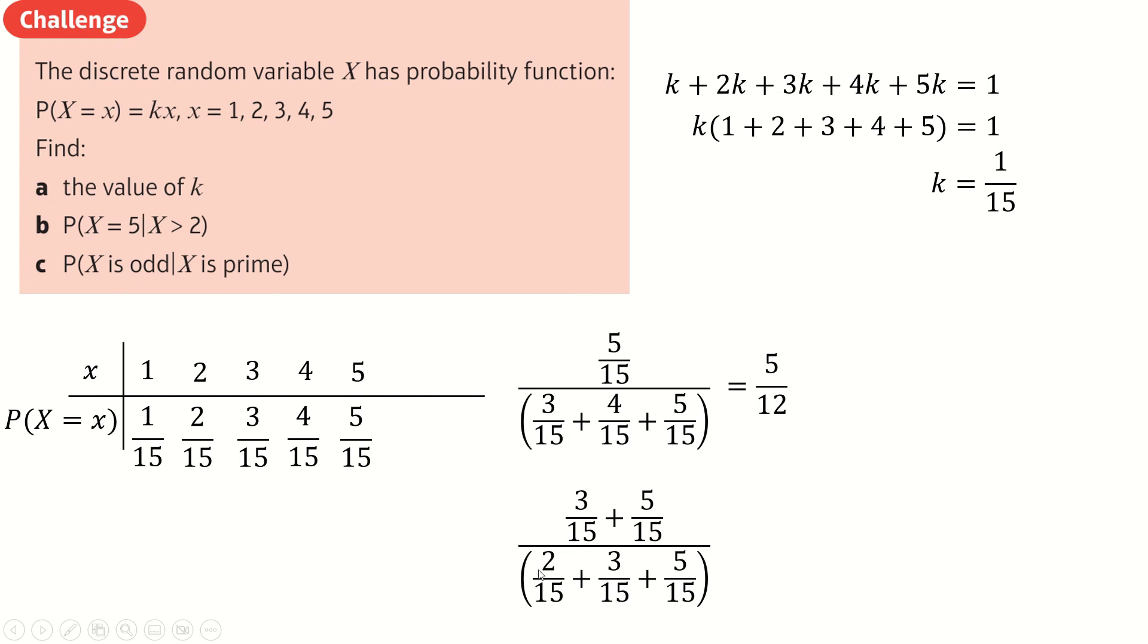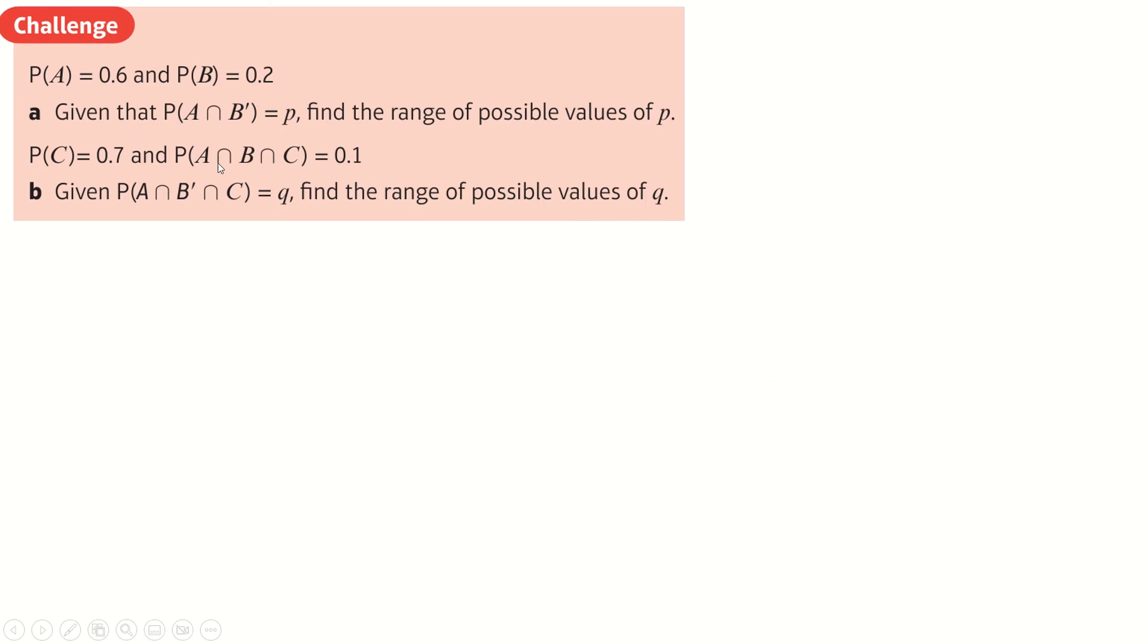And the 15s cancel again. So it just becomes 8 over 10, which is 4 fifths. Good. Next one is very similar to kind of what we were doing before. Actually, no, it's not. This one is actually kind of interesting. The only way that I thought to do this was just drawing a Venn diagram. I don't think I actually ended up needing this. Sorry, drawing a Venn diagram. A scattergraph. I refuse to draw a scattergraph. So that was the whole point.